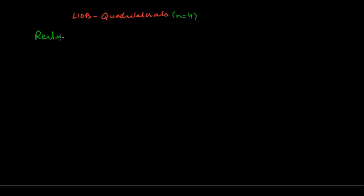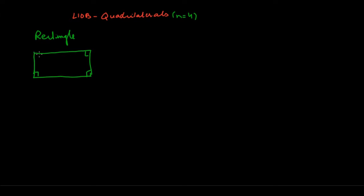A rectangle has four sides and each angle is 90 degrees. Opposite sides are equal, so this side and this side would be equal in length, and then the top and bottom would be equal in length.